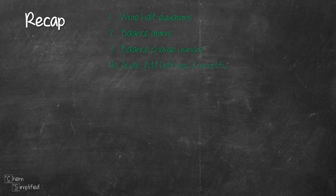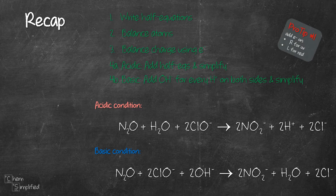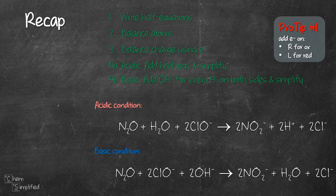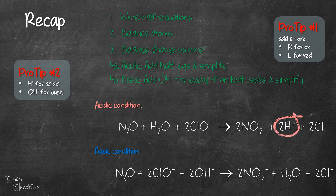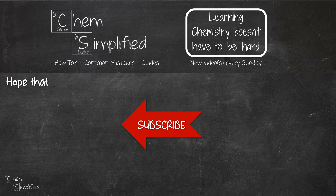To recap, we went through four steps to balance the redox equation in acidic and basic condition. When adding electrons in step 3, add them on the right hand side for oxidation and on the left hand side for reduction. For acidic condition there should be H⁺ in the equation, and for basic condition we should have OH⁻ and no H⁺. Always double-check the final work to verify that the number of atoms and charges are equal on both sides. I hope the four steps in balancing redox equations were helpful.